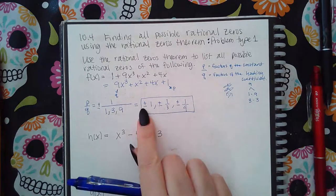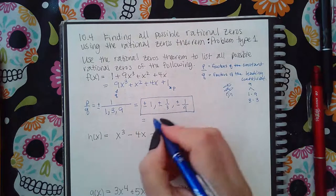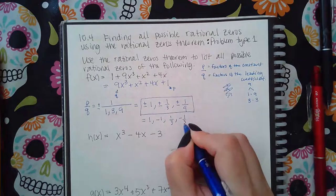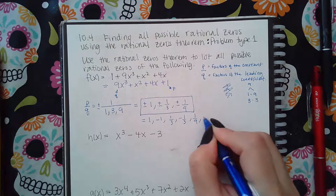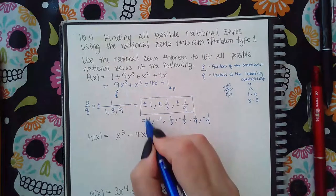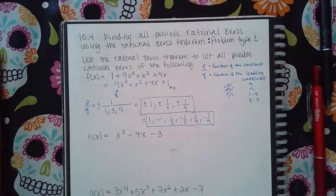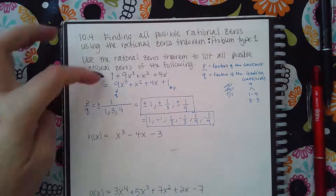If you don't want to use the plus or minus symbol, then you have to say 1 or negative 1, 1 third or negative 1 third, 1 ninth or negative 1 ninth.